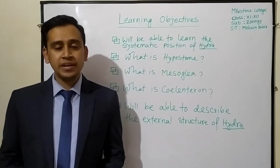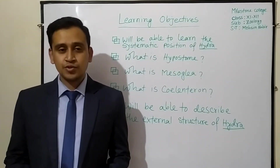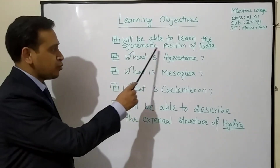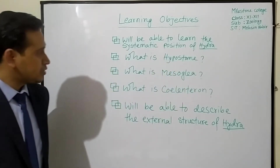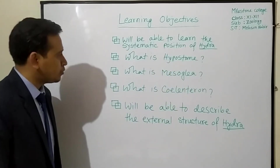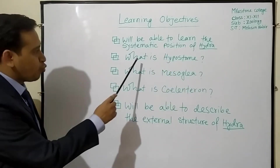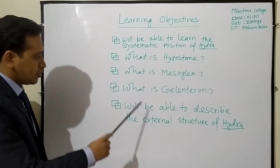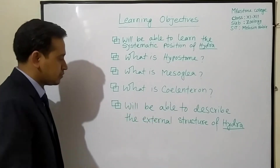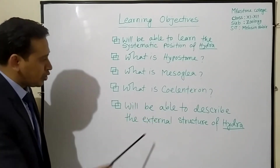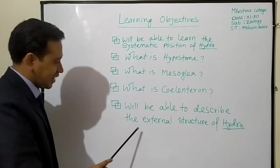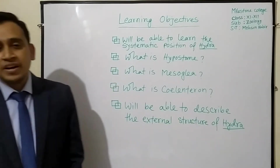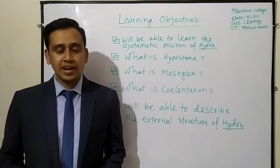After completing today's lesson, students will be able to learn the systematic position of Hydra. Students will also be able to learn what is hypostome, what is mesoglia, what is silenteron, and will also be able to describe the external structure of Hydra. So my dear students, let's move to the class.